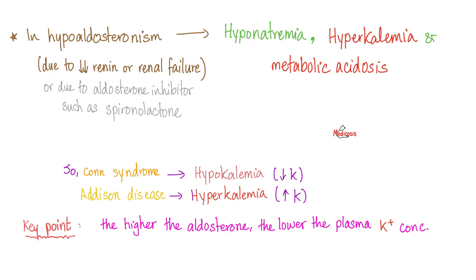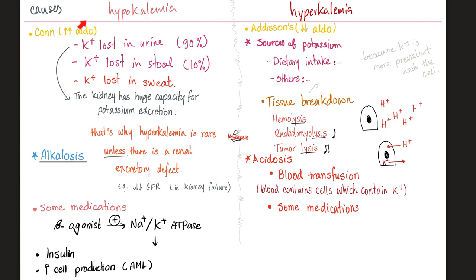What if aldosterone is low? Then you get the opposite: hyperkalemia. So when aldosterone is high, potassium is low in the blood. And when aldosterone is low, potassium is high.